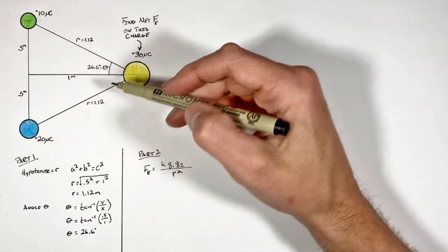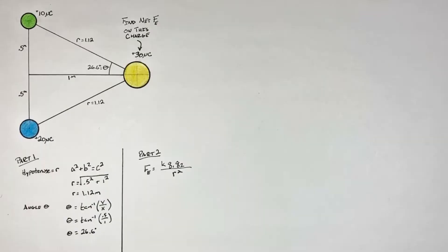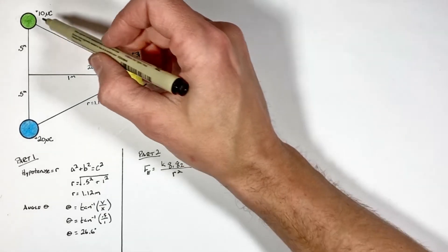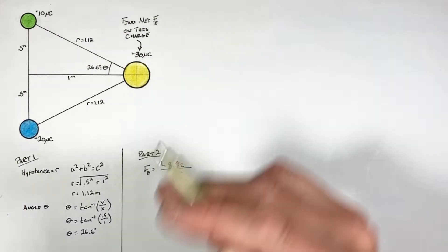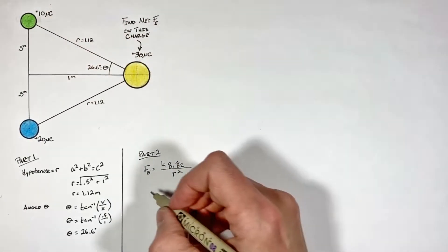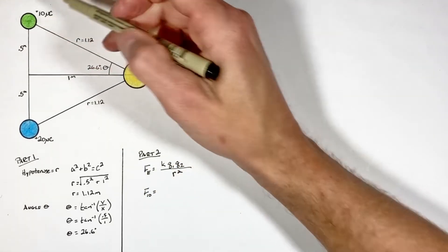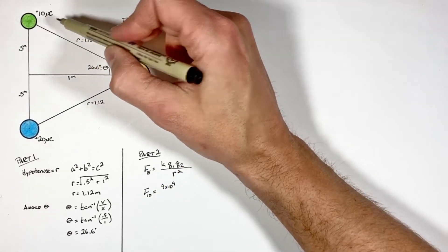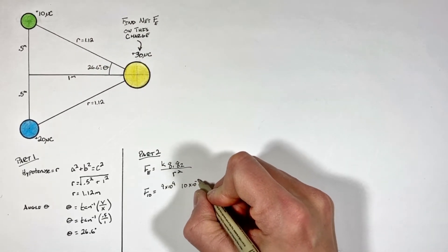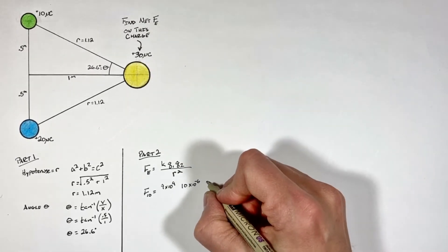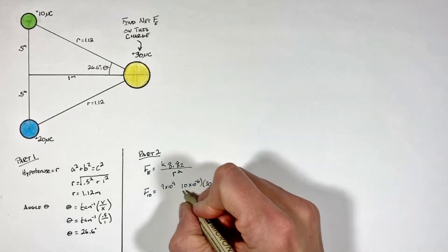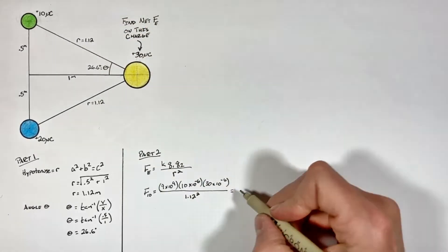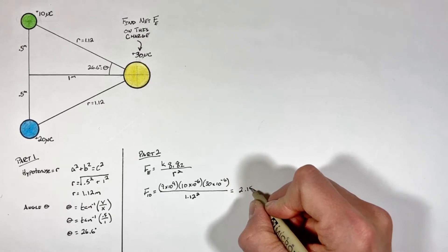There are two charges acting on our charge of interest, so we're going to look at the force by each charge individually using Coulomb's law. First, the force by the 10 microcoulomb charge is given by Coulomb's constant — that's 9 times 10 to the 9th — multiplied by 10 times 10 to the negative 6th coulombs, multiplied by 30 times 10 to the negative 6th coulombs, divided by 1.12 meters squared. This gives us an electric force of 2.15 newtons.